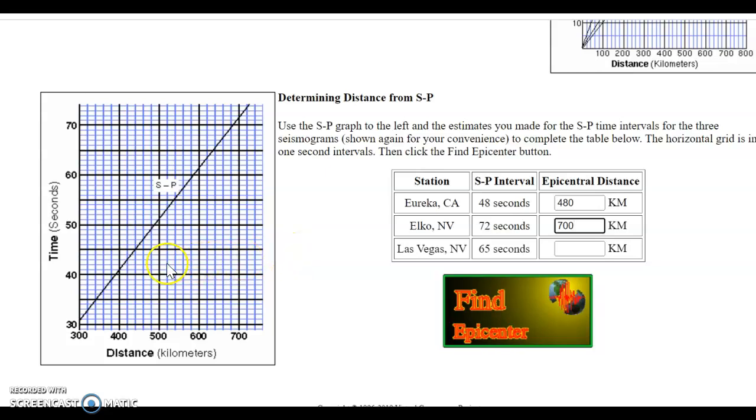And Las Vegas, 65 seconds. That intersects us a little before that blue line right there. Two to the right of 600. So 620, 640. We'll call it 638. And you can fine-tune this as much as you want. But let's see, just doing it quickly like that, how close I got. How will we know? You'll see. Find the epicenter.